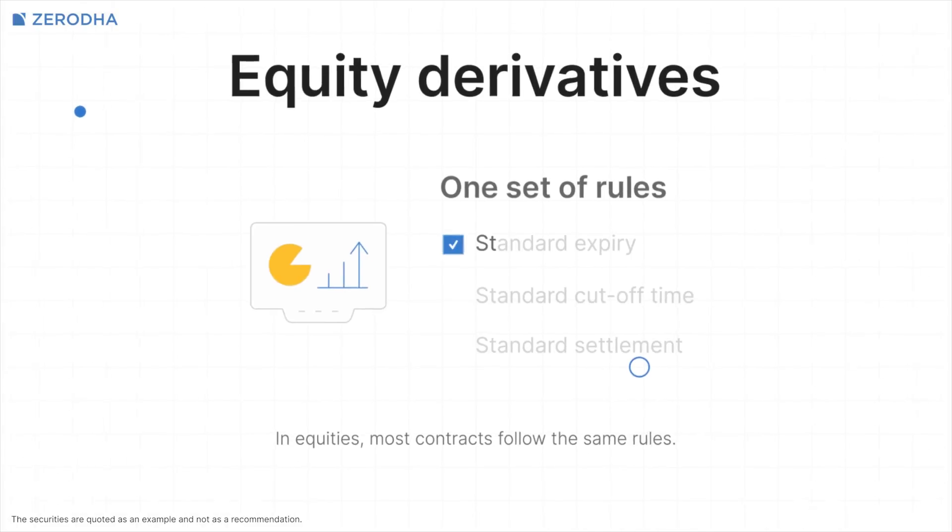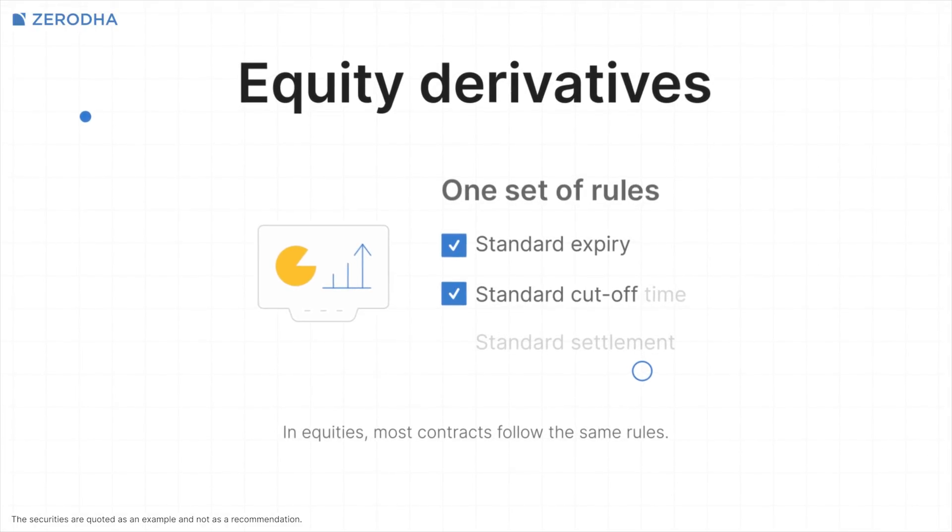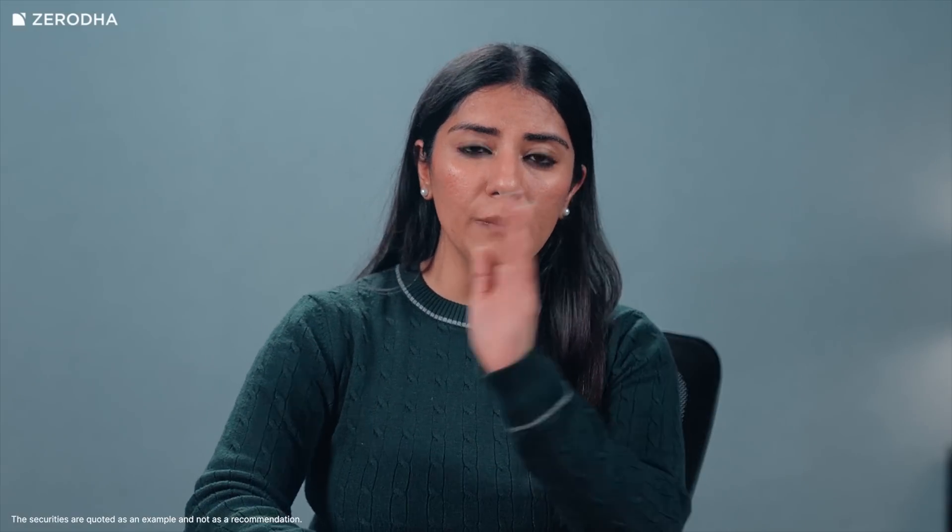Trading commodity futures and options comes with more moving parts than equity derivatives. In equities, most contracts follow a common set of rules. In commodities, the rules change depending upon what you are trading. Expiry dates, cut-off times, and even how contracts are settled can differ from one commodity to another.